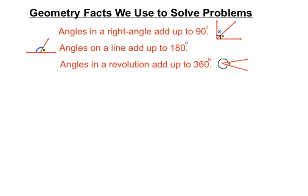Angles in a revolution will make up one full lap of the angles diagram and they will add up to 360 degrees together. We have vertically opposite angles are equal, and we have to remember that the ones that are opposite each other but a bit horizontal will also be equal to each other. So don't get fooled by the name there.